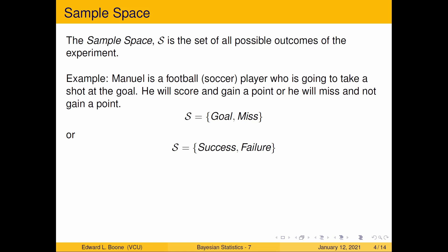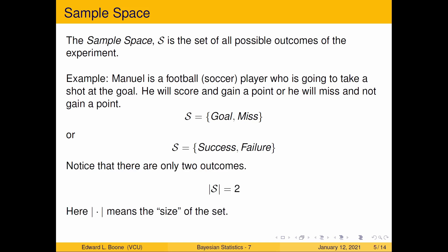Notice it's all the outcomes that we are interested in seeing. We don't need to know every outcome in detail of what might happen — we just need to know whether or not a point was gained or not. If it wasn't gained, then it was a miss. We also have bars around our S, which denotes the size of the set. This sample space has exactly two outcomes.